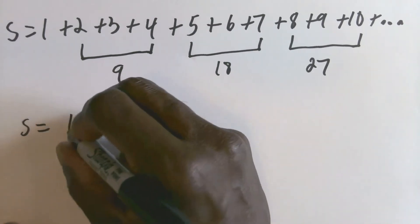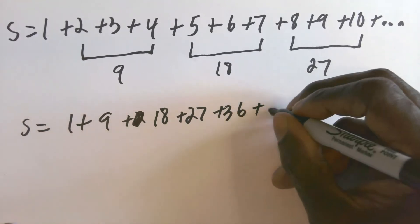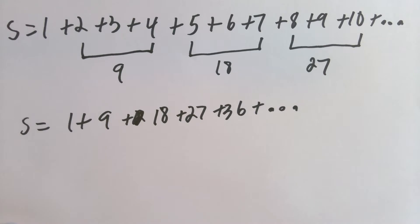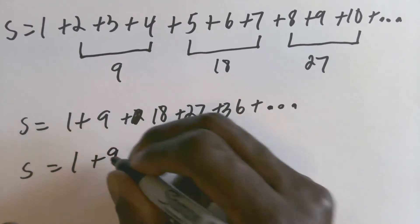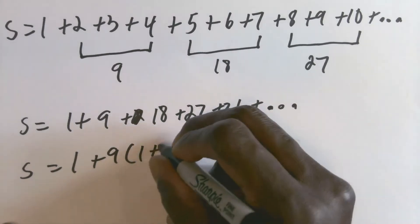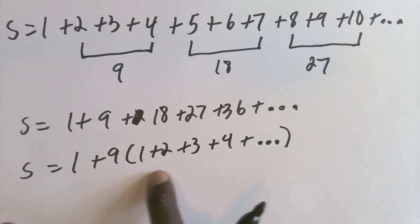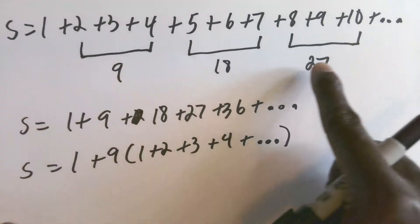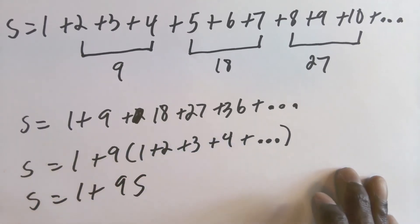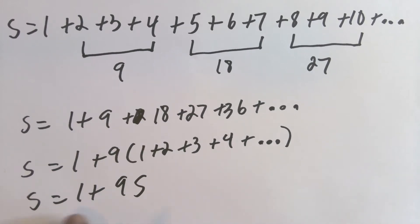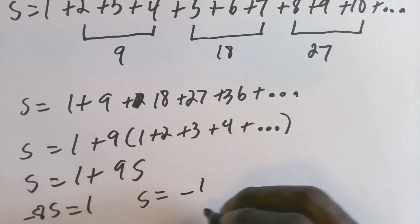So I want to rewrite this sum as 1 plus 9 plus 18 plus 27 plus 36, et cetera. Since all of these numbers are multiples of nine, I'd like to factor out the nine. Nine from nine gives one, nine from 18 gives two, nine from 27 gives three, and so on. What's in parentheses is the original sum I was trying to find, which I call S. So S equals 1 plus 9S. Subtracting 9S from both sides gives negative 8S equals 1, so S equals negative one over eight.